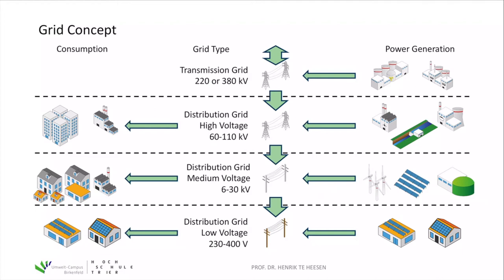There are four different grid levels in the European grid and mainly all over the world. The highest grid level is the transmission grid with a voltage of 220 or 380 kilovolts. This grid level is used to exchange electricity with other grids of other countries or other regions. Power generation comes from very large power plants like nuclear power plants or very large lignite or hard coal power plants with capacity on a gigawatt level, feeding their electric power directly to the transmission grid.